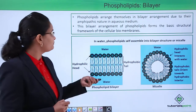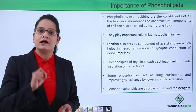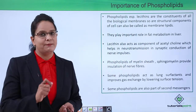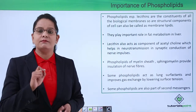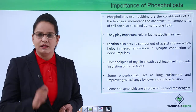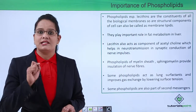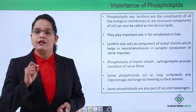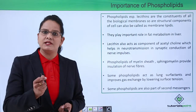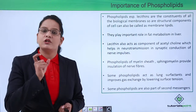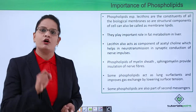Phospholipids, especially lecithin (which is phosphatidylcholine), are a very important constituent of the lipid bilayer and all cell membranes. Lecithin also plays an important role in the metabolism of fat inside the liver. Additionally, lecithin acts as an important component of acetylcholine, a neurotransmitter. When a nerve impulse is conducted and a synapse is formed, the chemical neurotransmitter released is acetylcholine.